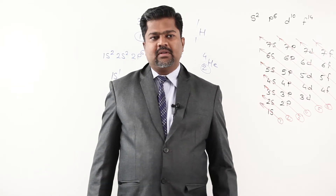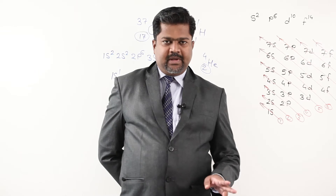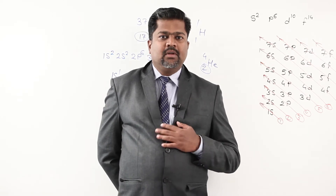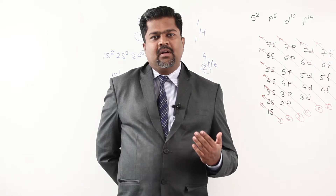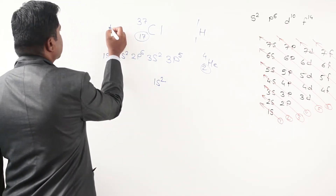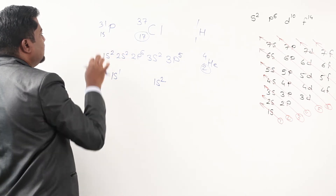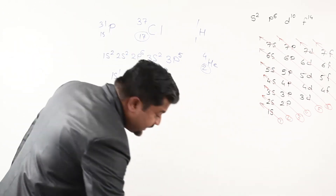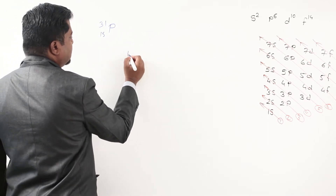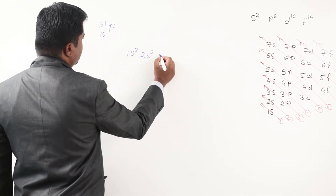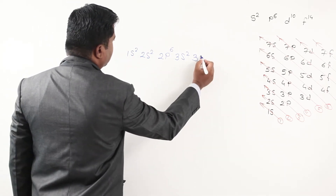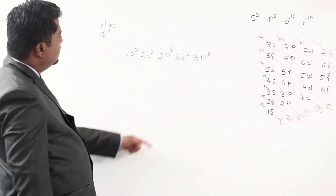It is not always so simple — some complications are there. We are now switching over to another complication called P orbital splitting. First, carry out electronic configuration of phosphorus, atomic number 15, mass number 31. It is: 1s2, 2s2, 2p6, 3s2 — that is 12 electrons — remaining 3. So it is 3p3. This electronic configuration is no doubt right, but I want further detail.